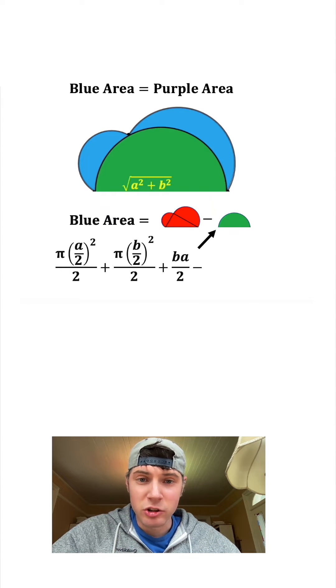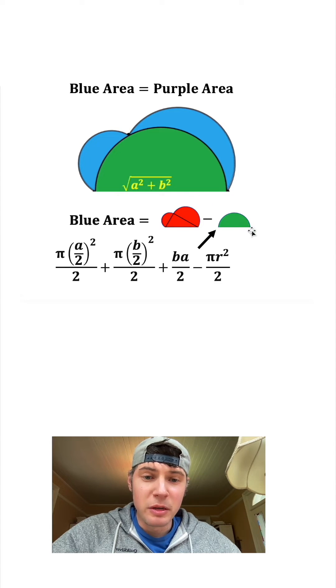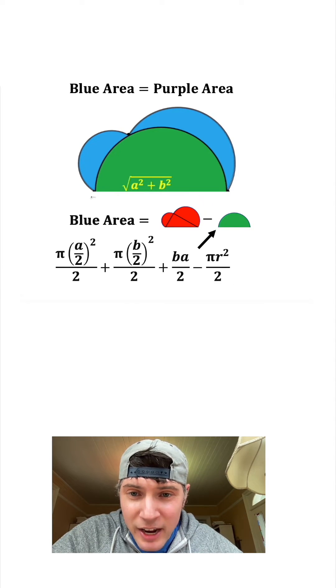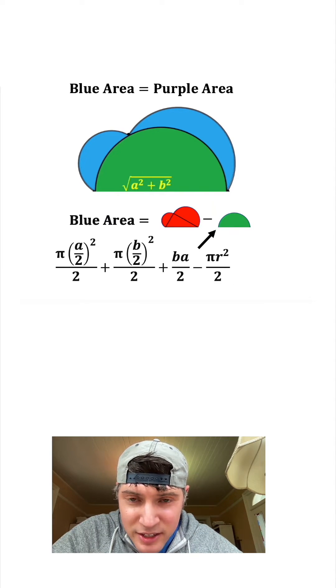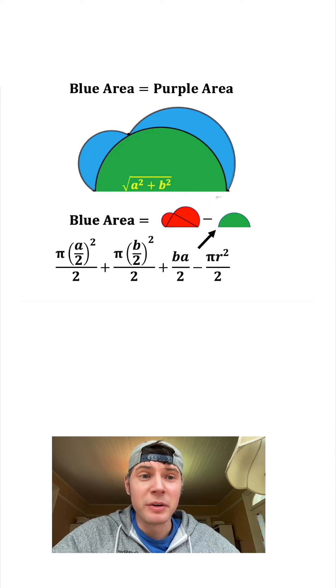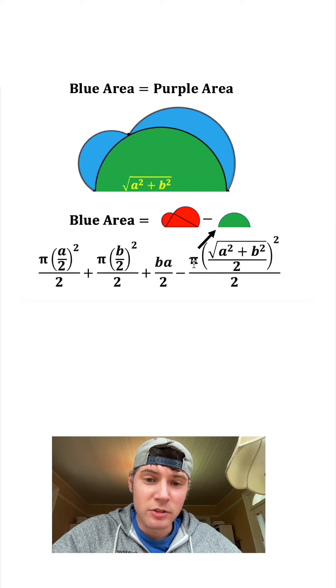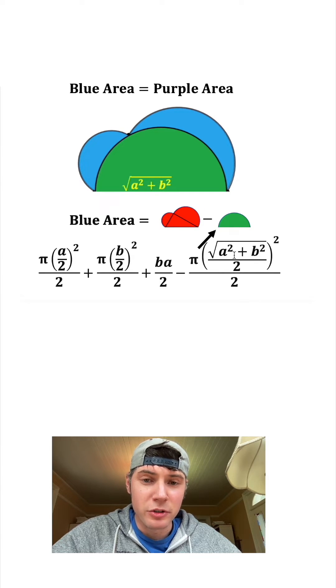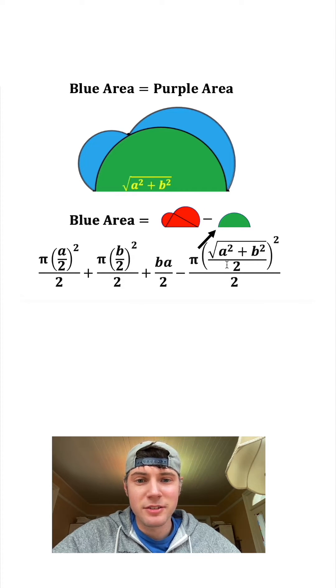We're going to subtract from them this larger semicircle. Well, it's also going to be a pi R squared over 2. Now the diameter of this semicircle is the entire square root of A squared plus B squared, so we want to cut that in half to get the radius. So it's going to be pi R squared over 2, where R is all of this craziness.